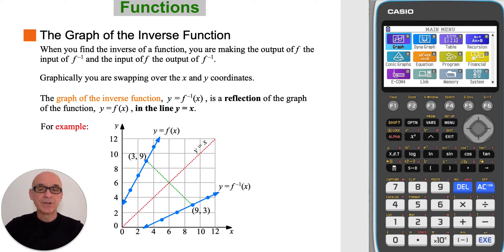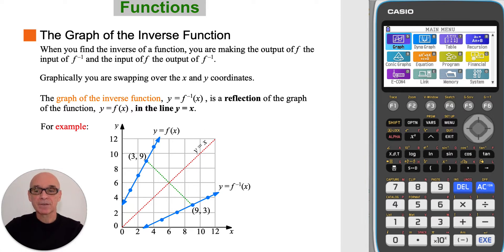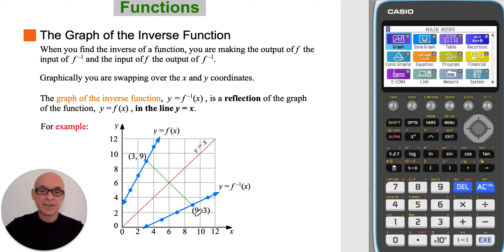When you find the inverse of a function, you are making the output of f the input of inverse f, and the input of f the output of inverse f. So graphically, you are swapping over the x and y coordinates. This means that the graph of the inverse function is a reflection of the graph of the original function in the line y equals x, as shown in the diagram. For example, we can see that f of 3 is equal to 9 — 3 maps to 9 — and inverse f of 9 is equal to 3 — 9 maps back to 3. And these points are a reflection in the line y equals x.